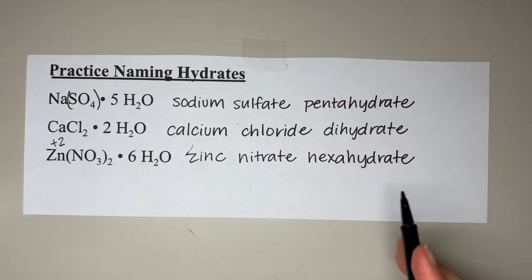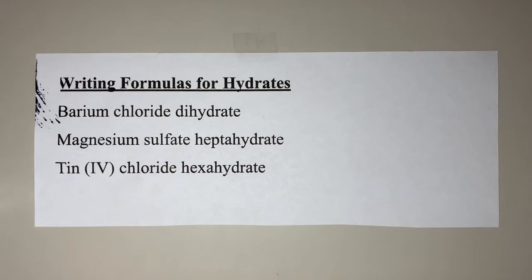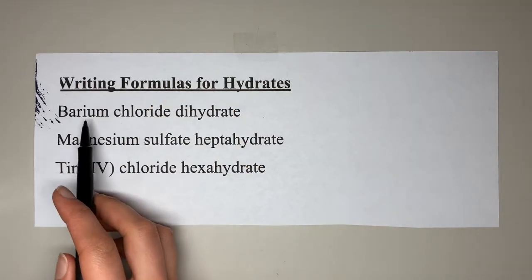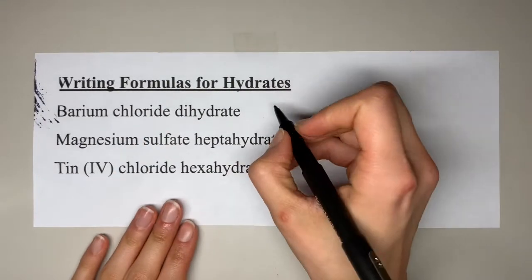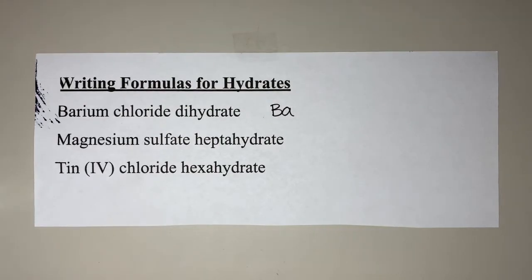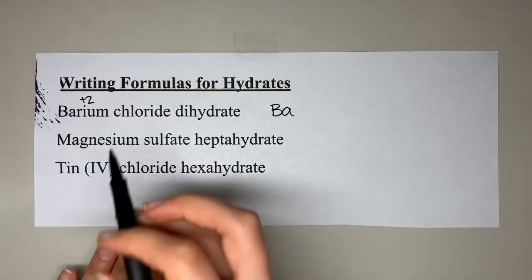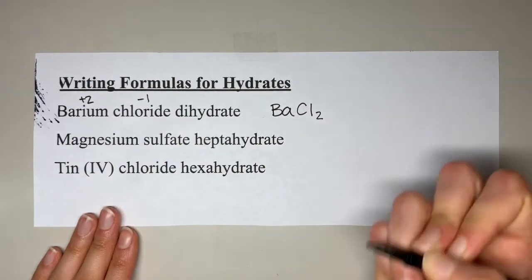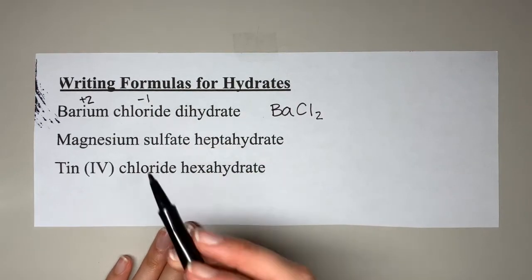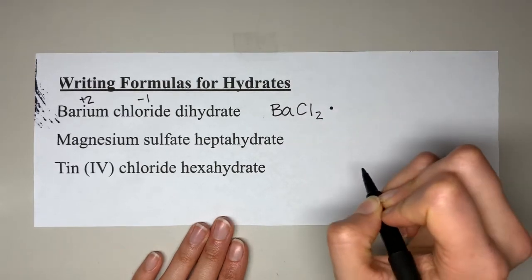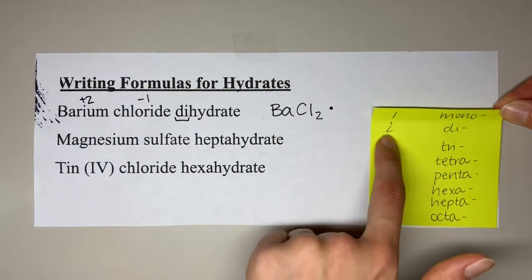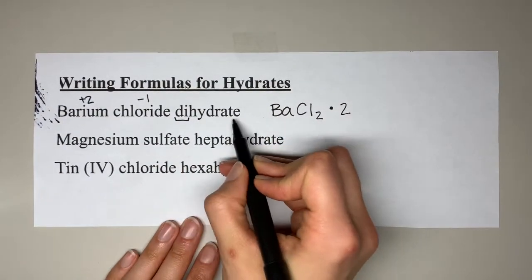Now let's practice writing formulas for hydrates. For barium chloride dihydrate, we first write the formula for barium chloride. Barium is Ba, group two, so +2 charge. Chloride is Cl with a -1 charge. Crisscrossing gives BaCl2. Then we add the hydrate portion with a dot: 'di' means two, and 'hydrate' means water, so we add 2H2O.